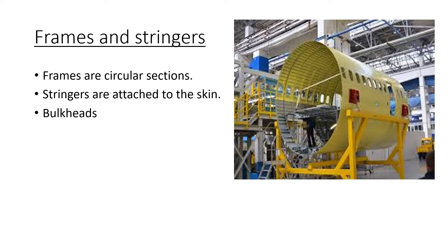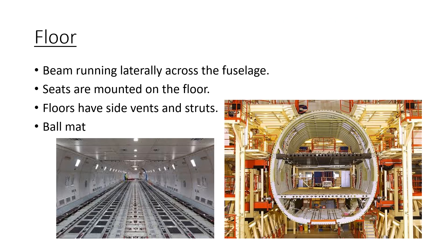Bulkheads are like drum skin — flat discs found in the nose and close to the tail in most pressurized aircraft. Their job is to carry the load imposed by the pressurization of the fuselage.